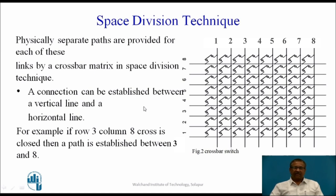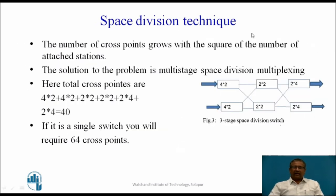What happens here is a connection can be established between a vertical and a horizontal line. For example, row 3 and column 8 — this switch must be closed so that there can be a connection between 3 and 8. As the number of cross points grows with the square of the number of attached stations, the complexity of the switching network increases, and the solution to the problem is multi-stage space division. In total, 40 cross points are there in this network, but if you implement in a single stage, we would require 64 cross points.